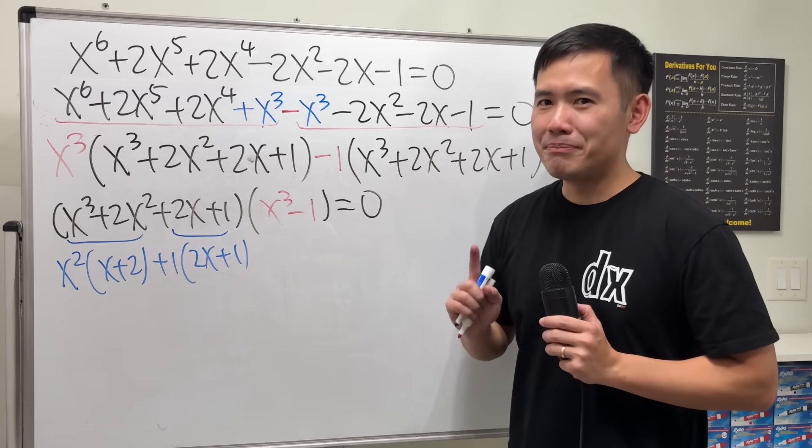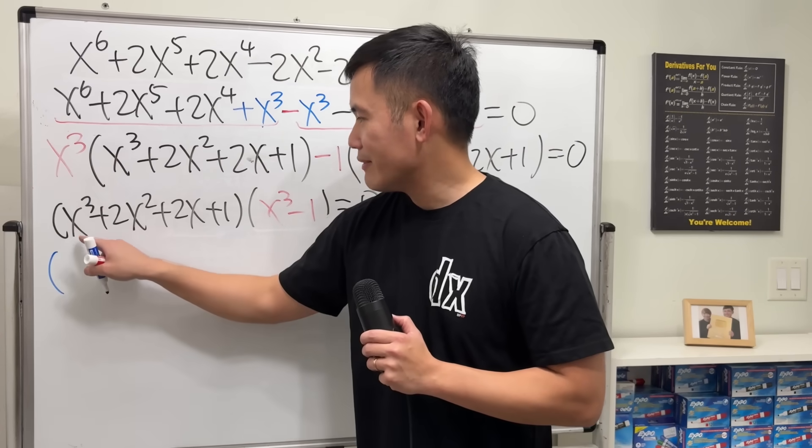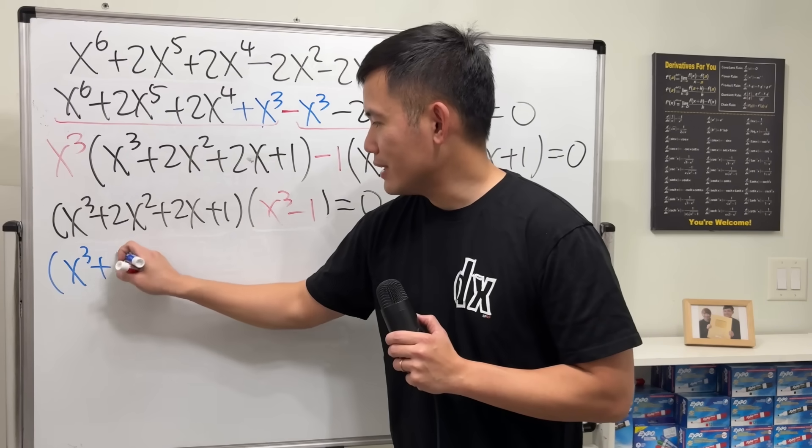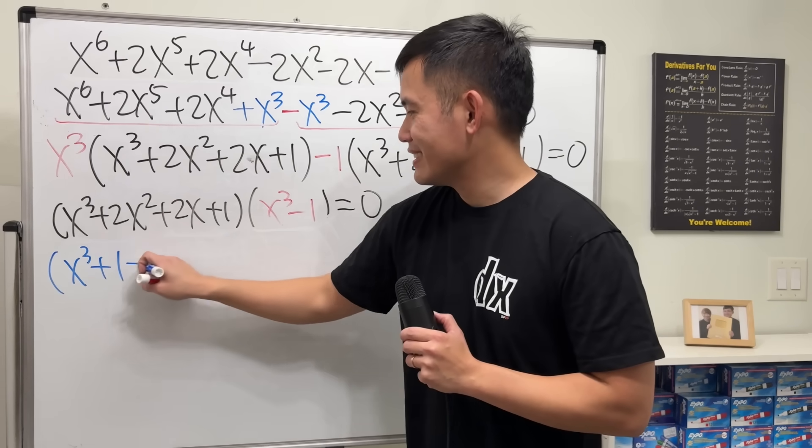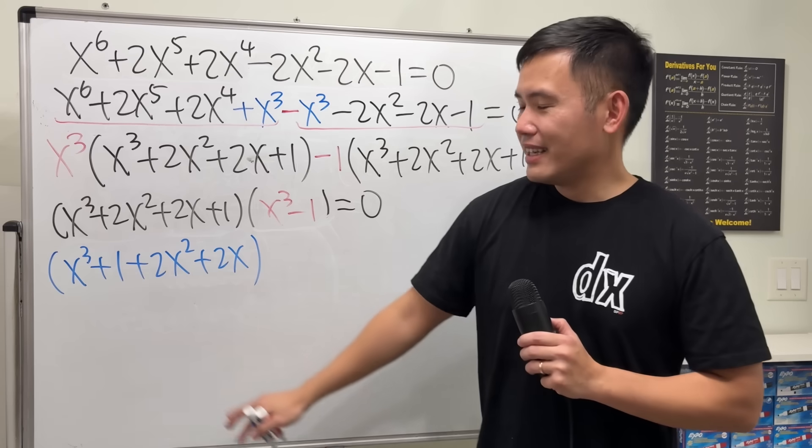In fact, this part's not bad at all. Let me show you. For this, the truth is, all we have to do is put x^3 and then plus 1, and then write down the rest. And then do this by grouping.